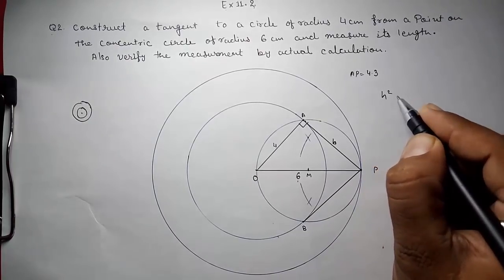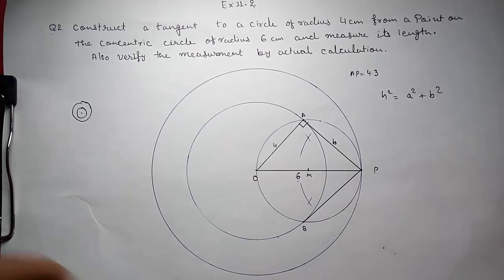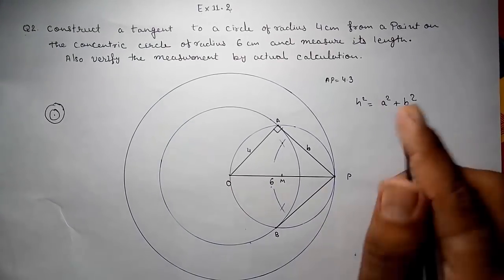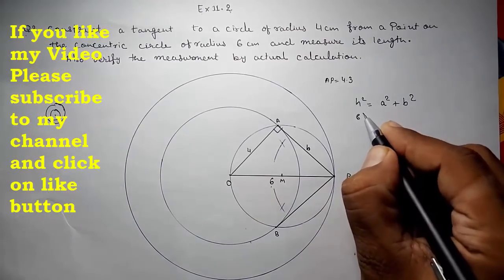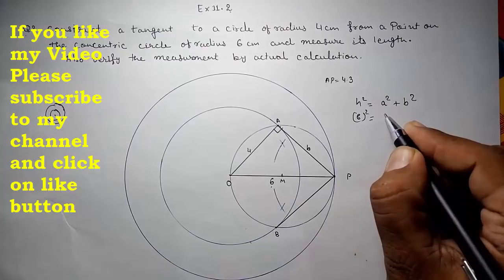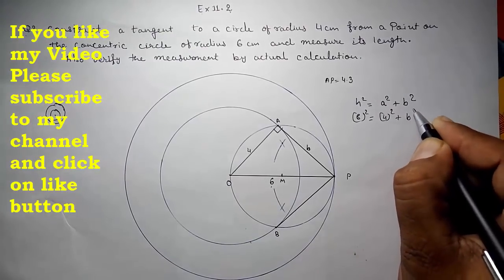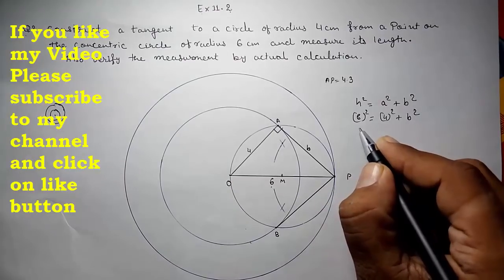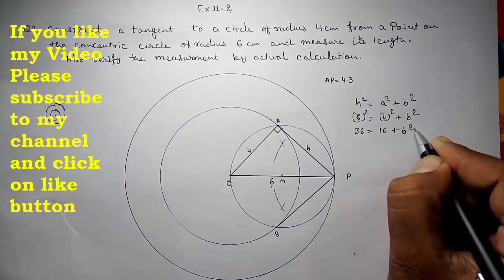We are having the formula for Pythagoras: H² is equal to A² plus B². Means hypotenuse square is equal to the sum of square of other 2 sides. So here hypotenuse is 6 square, and A square is 4, and B square.